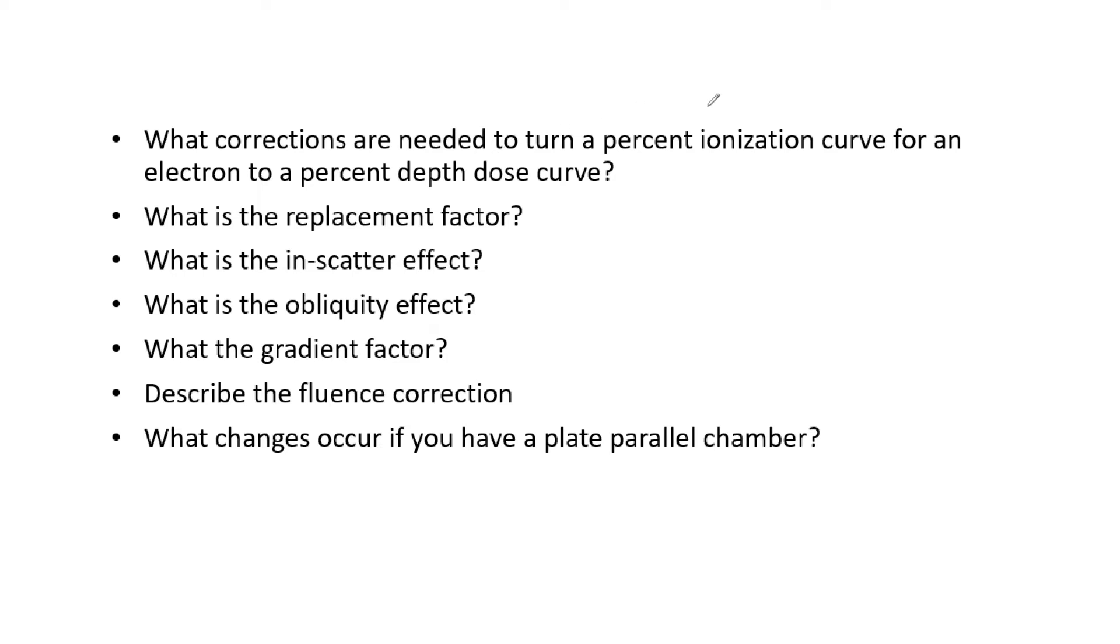To begin, what corrections are needed to turn a percent ionization curve for an electron to a percent depth dose curve? Notice we said for an electron. What is the replacement factor? What is the in-scatter effect, the obliquity effect? What is the gradient factor? Describe the fluence correction and what changes occur if you have a parallel plate chamber?